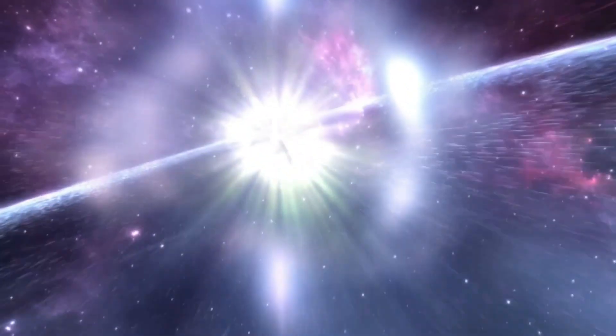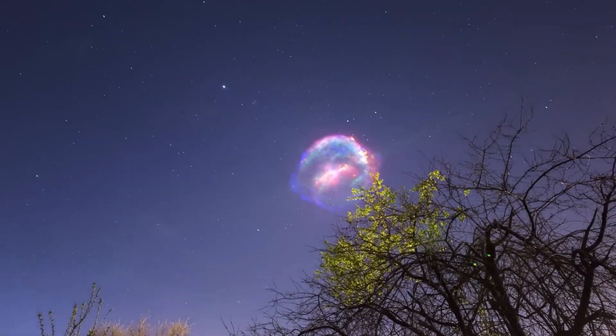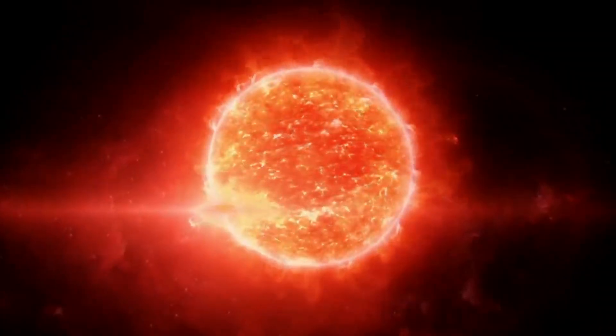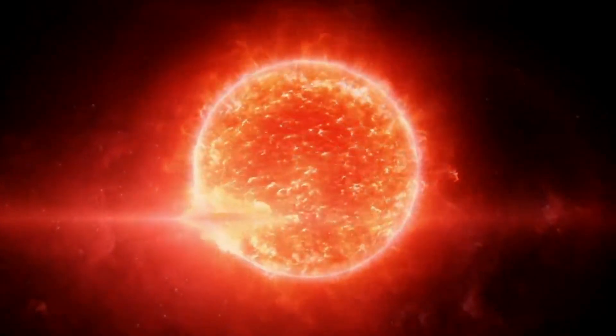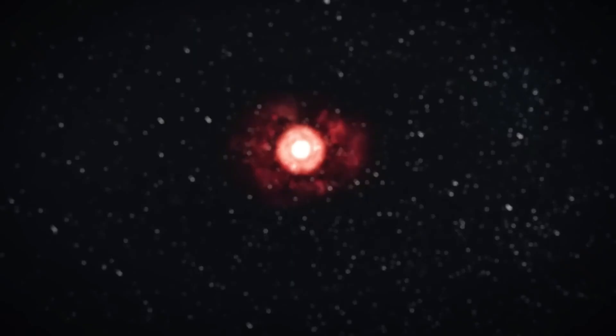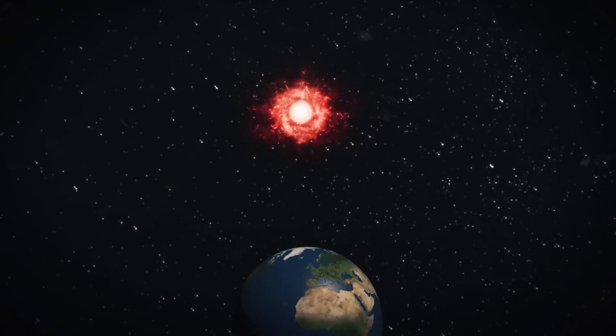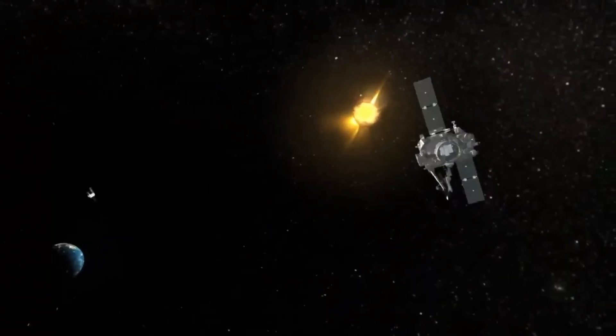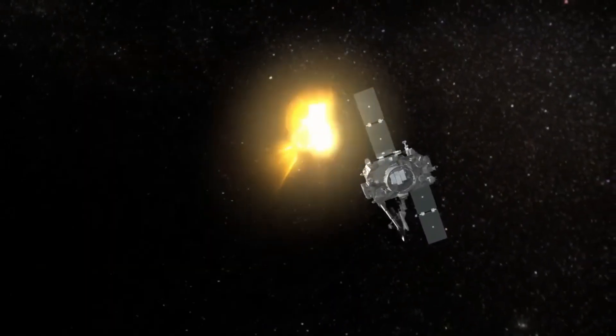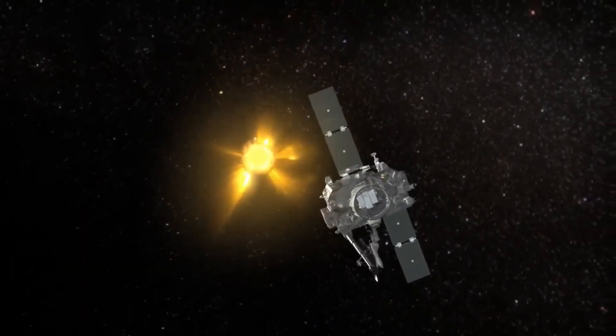While a Betelgeuse supernova would be an incredible sight, it also raises questions about its effects on Earth. Fortunately, we are at a safe distance, as Betelgeuse is located about 650 light-years away. This distance means that the explosion would not pose any direct threat to our planet. However, it would offer a unique opportunity for scientists to study a supernova up close, providing valuable insights into the death of stars and the formation of elements essential for life.